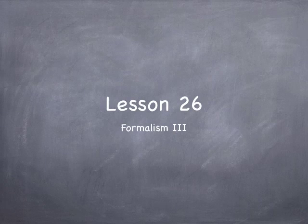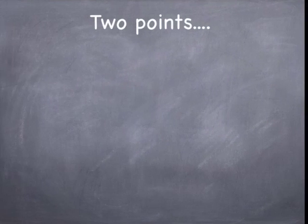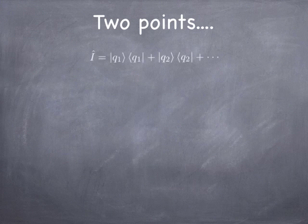Hi guys, welcome back. It's time for lesson 26, our third and final lesson on formalism. Before we begin, I want to make two points. One is that you can always construct the identity out of the projection operators that project out the eigenvectors of any Hermitian operator. Hermitian operators have eigenvectors that can form an orthonormal basis, and you can use that basis to form the identity. That's going to be an important concept as we move forward.